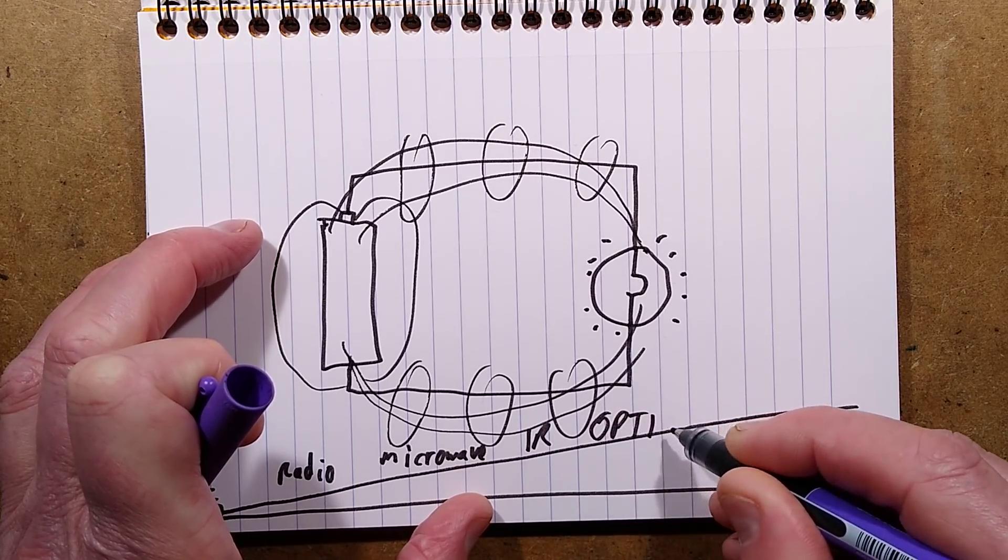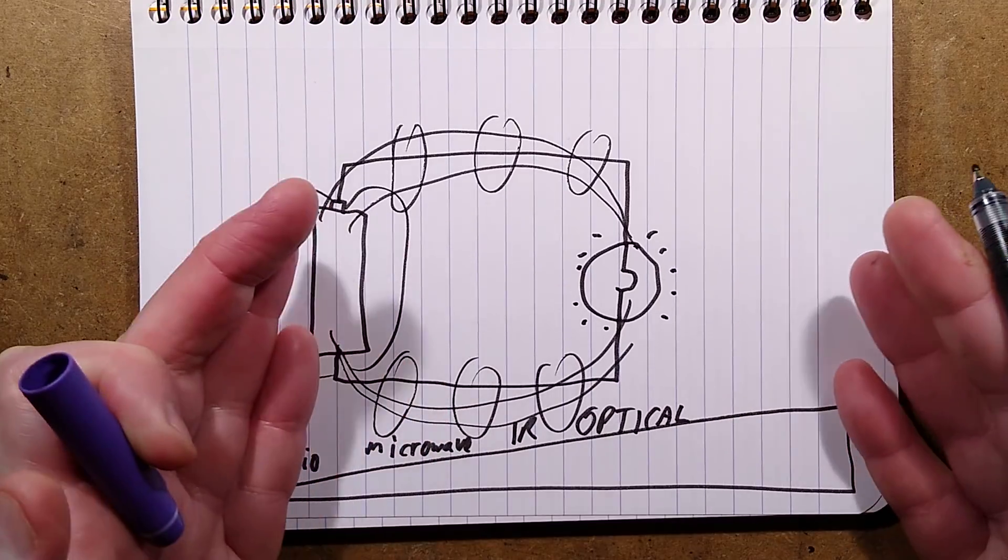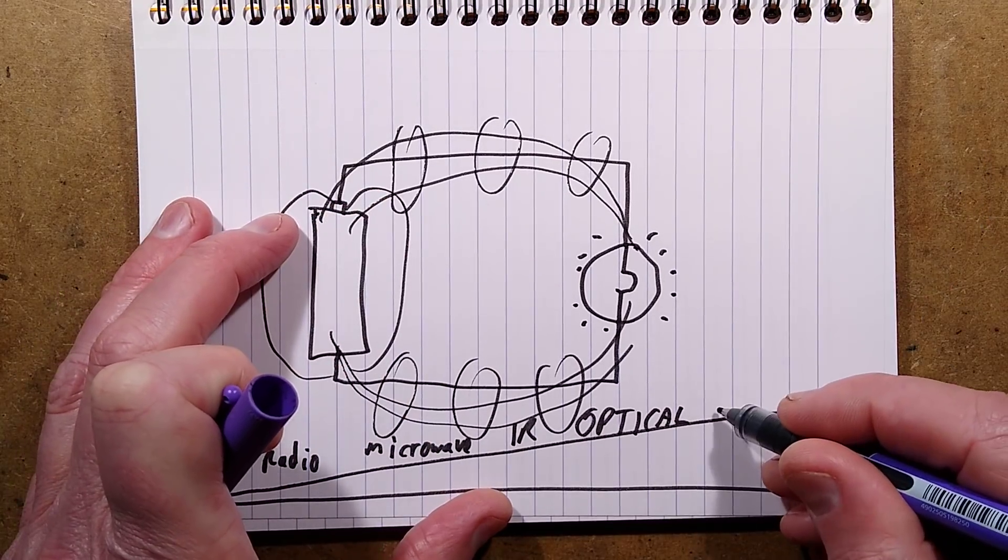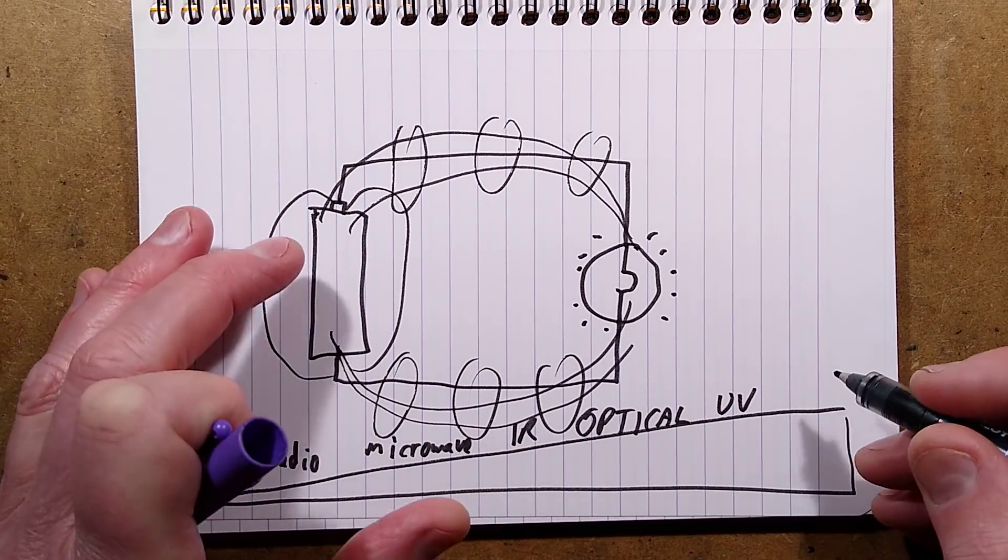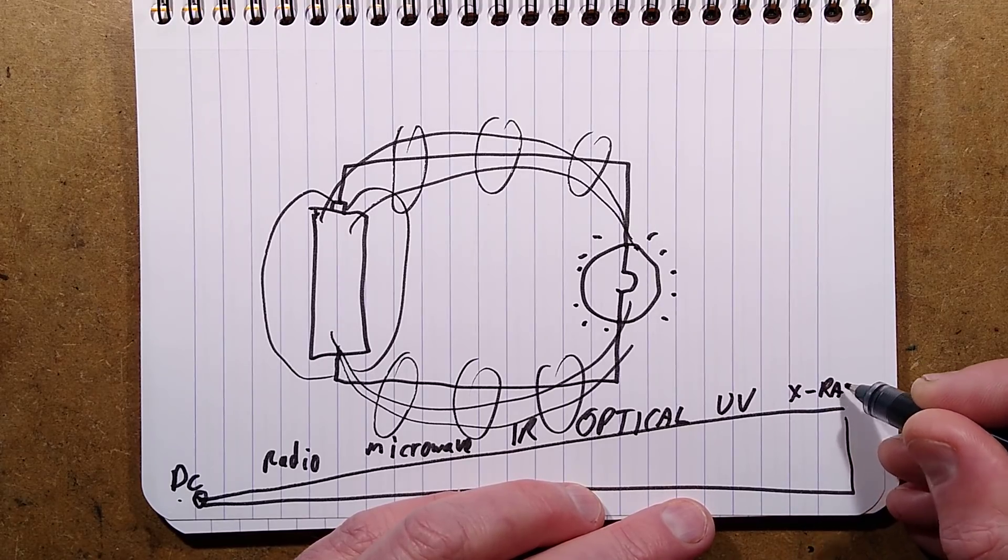And then it goes into the infrared, then the optical spectrum, that's the, I was going to say that's the sunlight bit, but in reality, the optical spectrum actually covers a whole load of this. Then to the ultraviolet and then to like all the nasty bits above that, like x-rays and gamma radiation. We don't want to know about those bits.